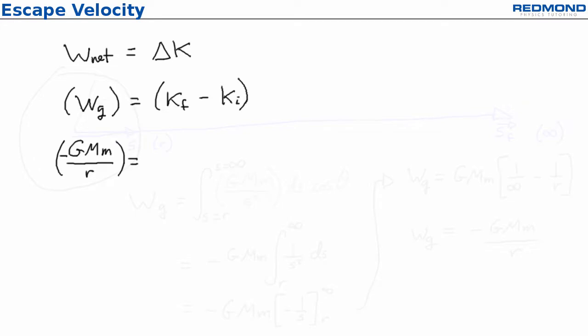Delta K is K final minus K initial. Expanding these terms gives GMm over R is equal to 1/2 m V final squared minus 1/2 m V initial squared.